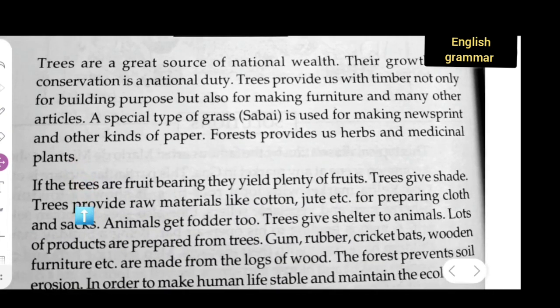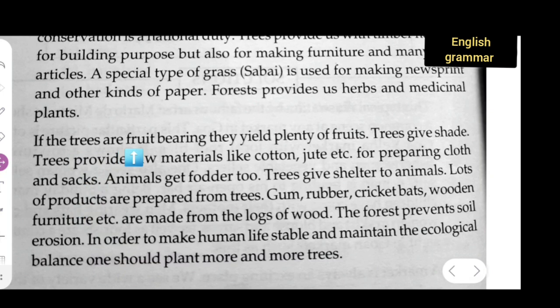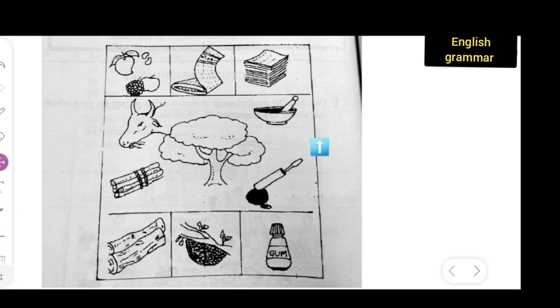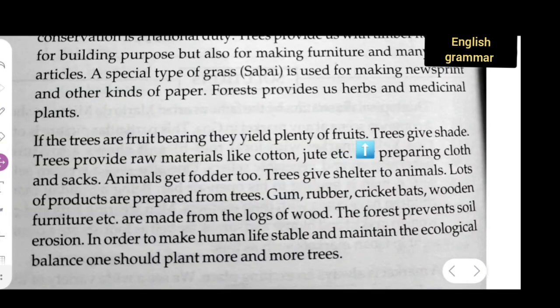Next paragraph y'all can take down. If the trees are fruit bearing, they yield plenty of fruits. Here we can see the fruits, so obviously we will write something about the fruits related. Tree gives shade. It also gives us shade.